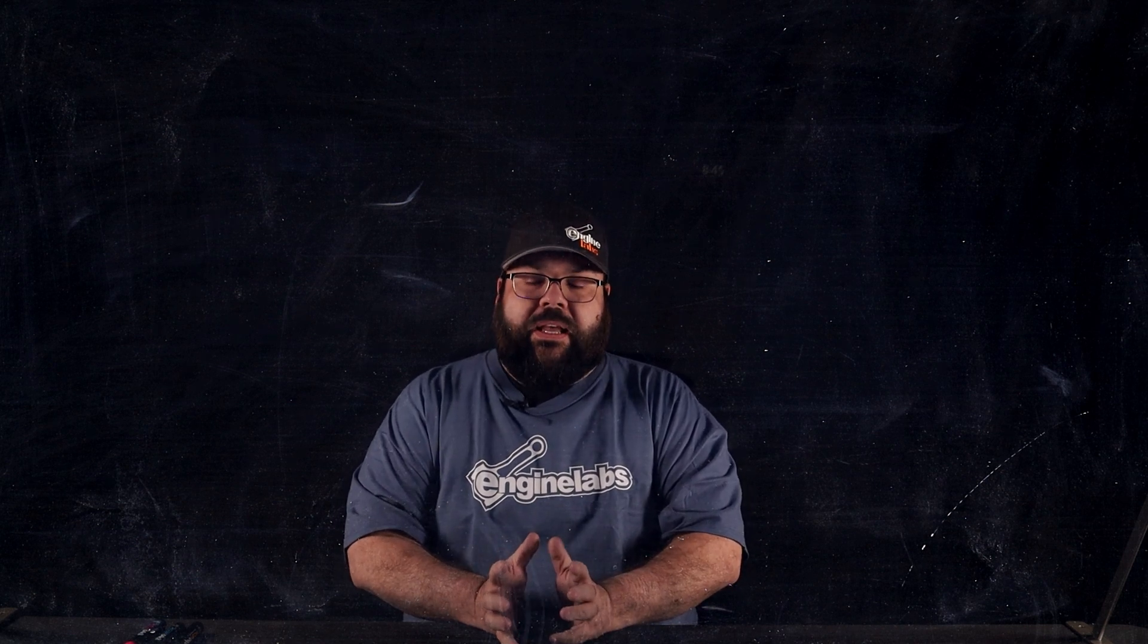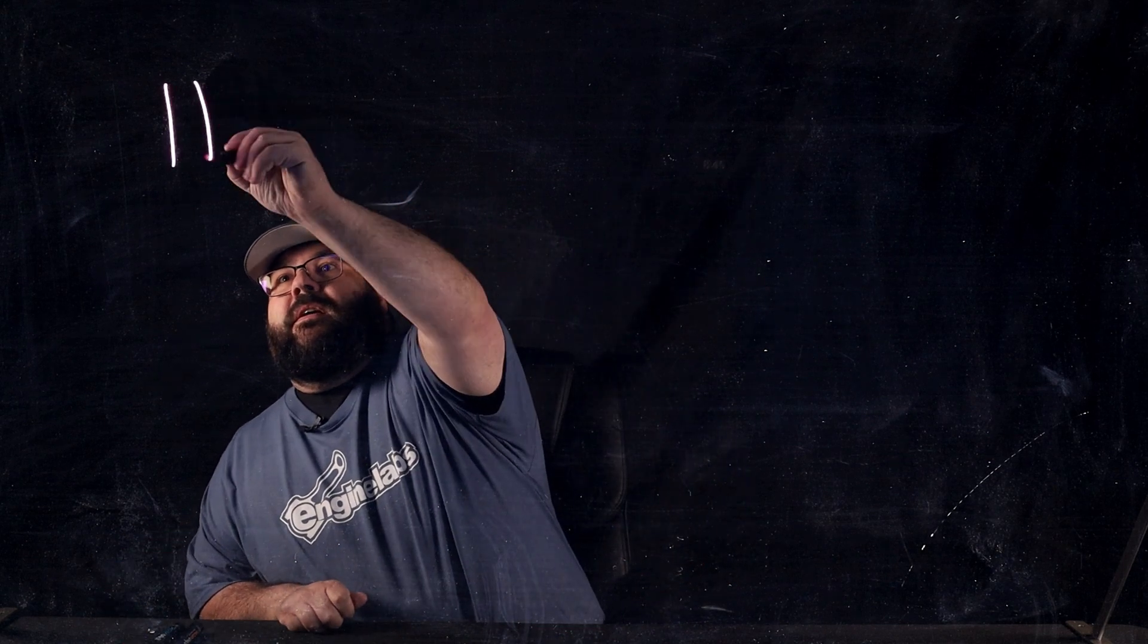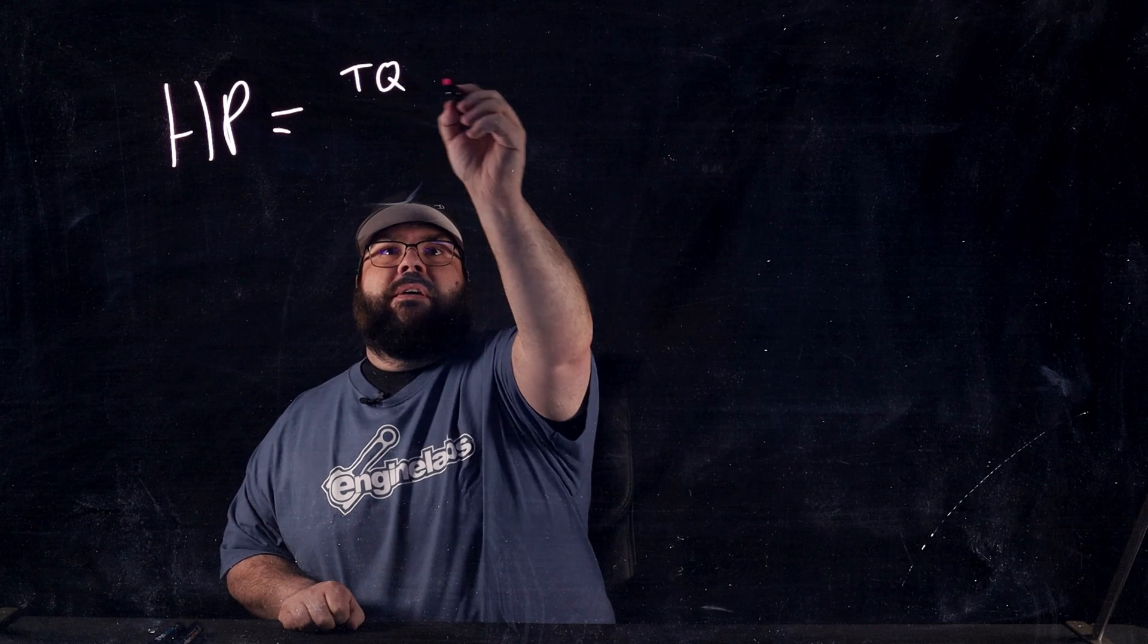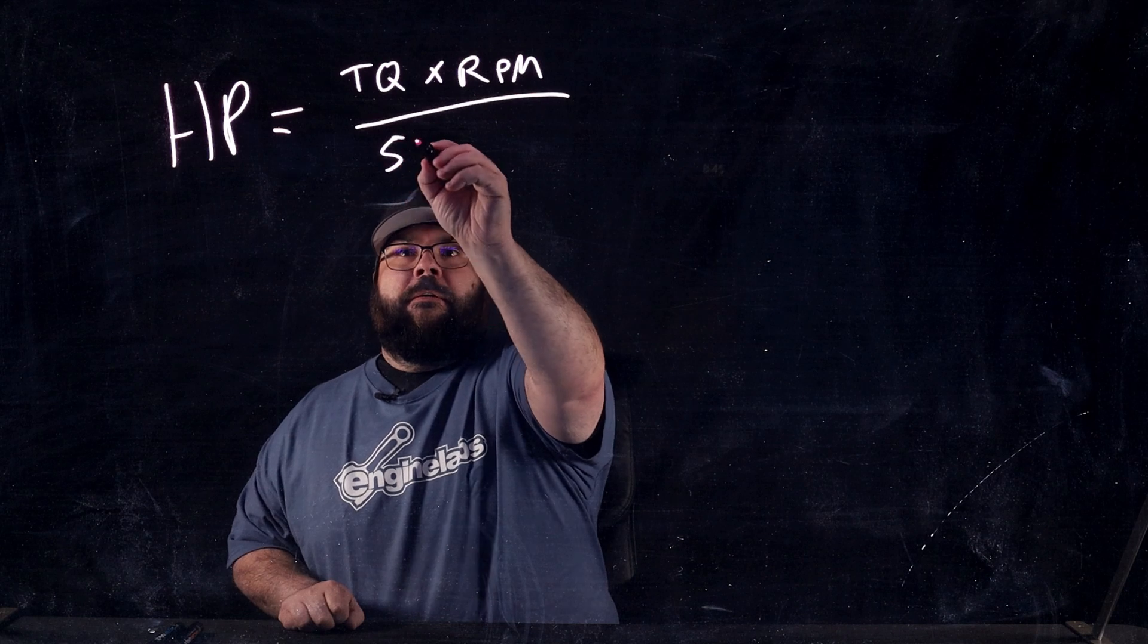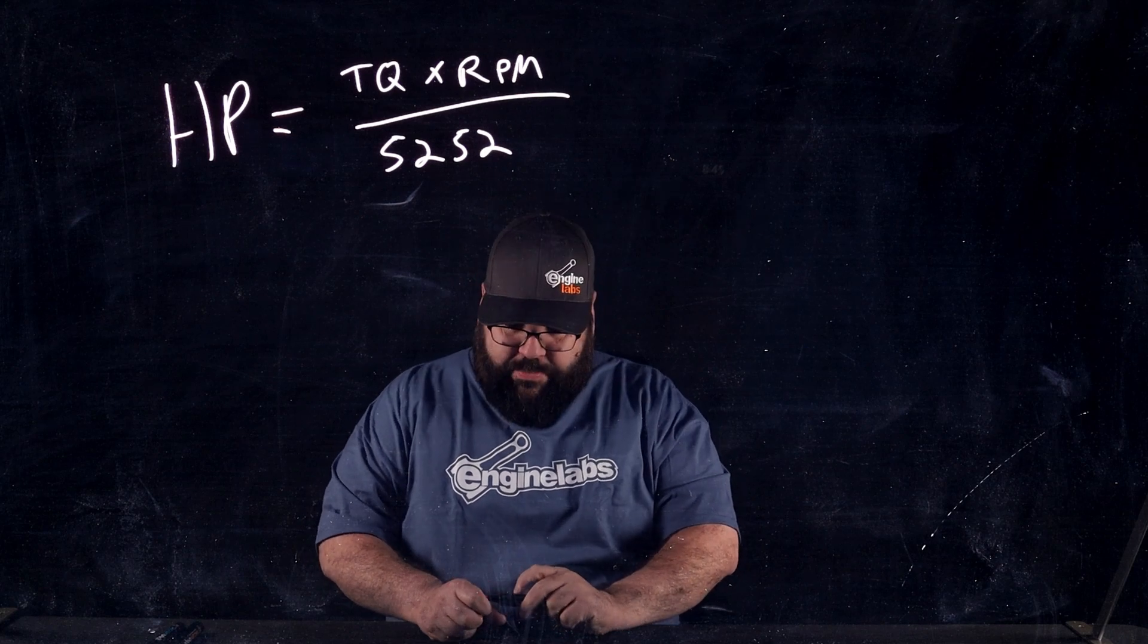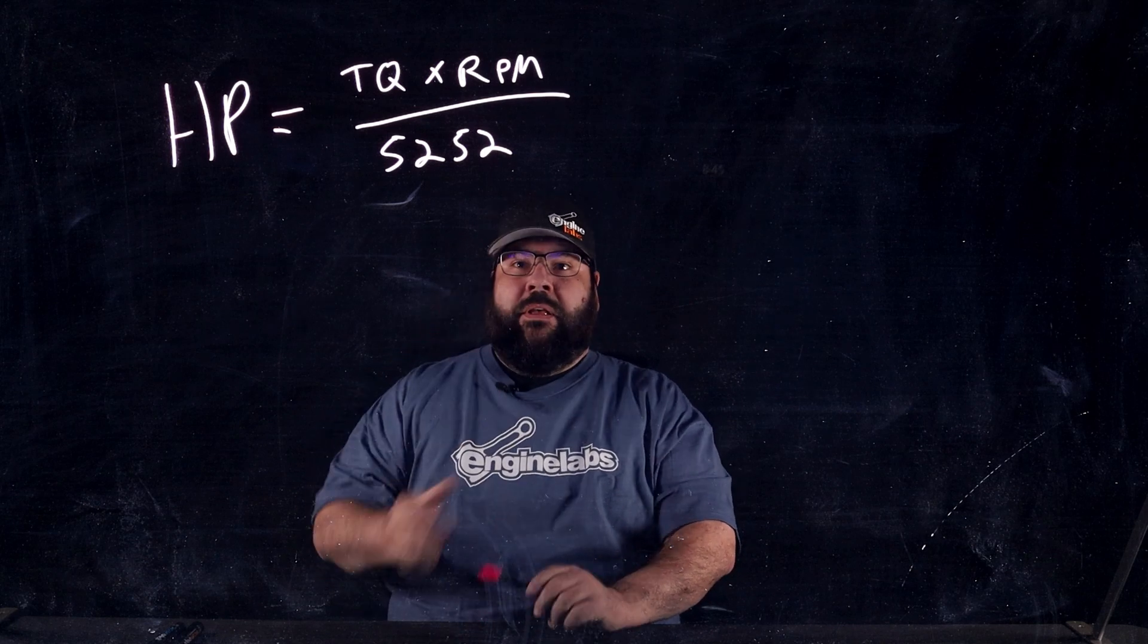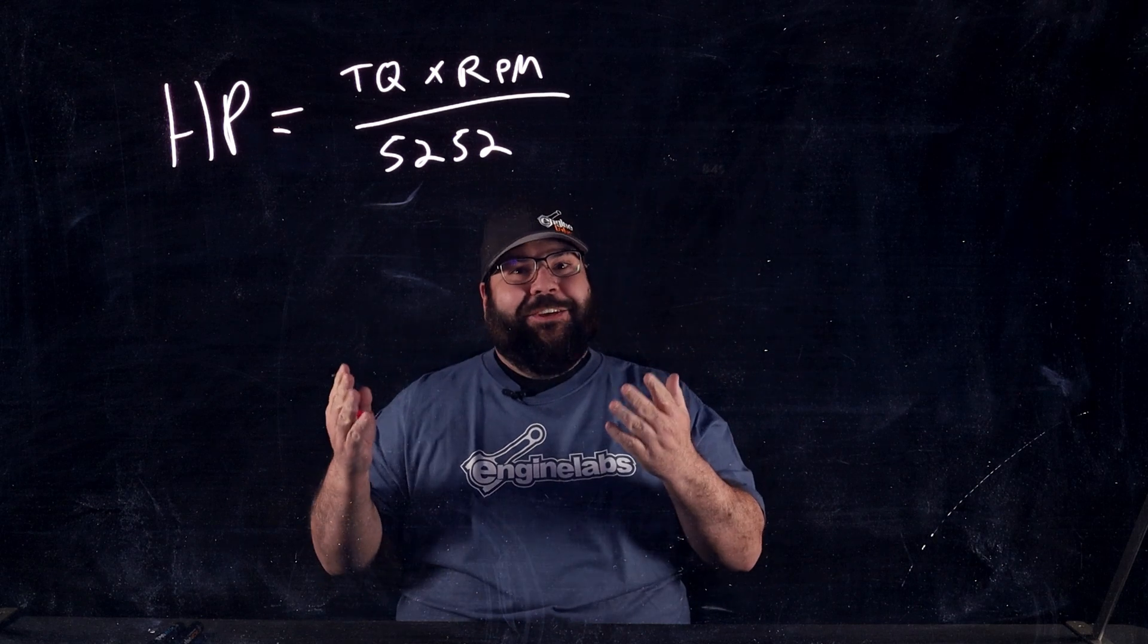Really, it comes down to one thing. Horsepower is actually a calculation, and that is torque times RPM over 5252. Now, that number might look familiar, because every dyno graph you have ever seen in your life crosses at 5252 RPM. Why? Well, if you're a math person, you've already figured it out.